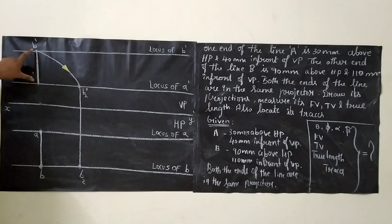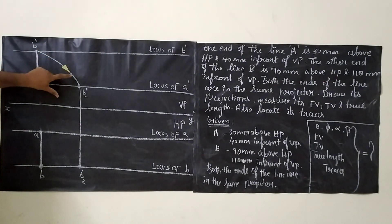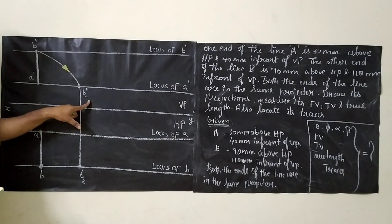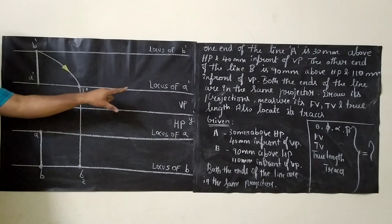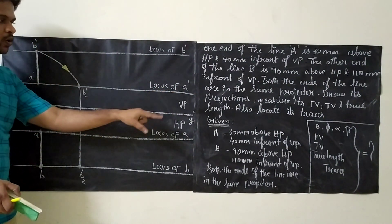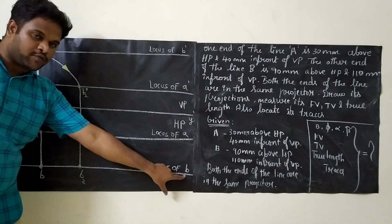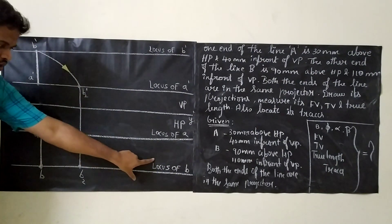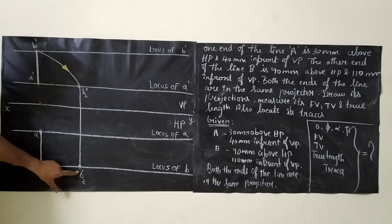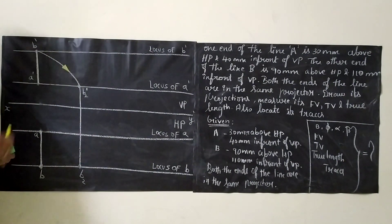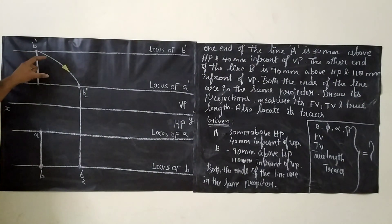Take your compass, measure A'B' and rotate an arc. When you rotate the arc, it will cut the locus of A' at one point — that point is called B2. Mark that point and write B2. Then extend this front view line vertically to the opposite locus, that is extend till the locus of B, and you will get a point — this point is called B2, and you put an arrowhead to show the arc is moving downwards.